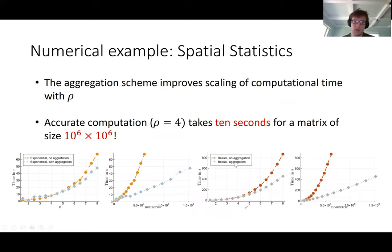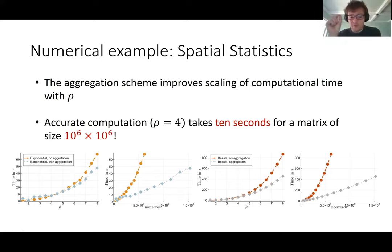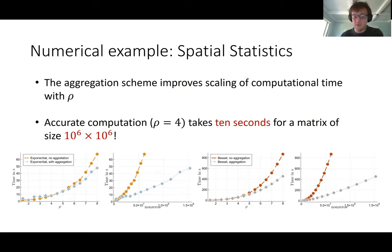On computational time as rho changes: as our theory predicts, the aggregation scheme improves complexity as rho or the number of non-zeros increases. For a Matern exponential covariance with cheap kernel evaluations, we bring down computational time to about 10 seconds for a million-by-million matrix on a single thread. Because the method is trivially parallelizable, it could easily be scaled to many more cores, potentially handling billion-by-billion problems.